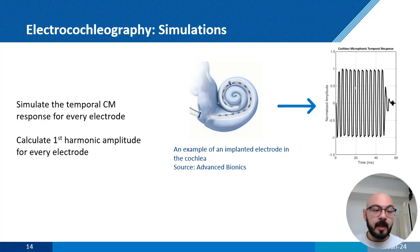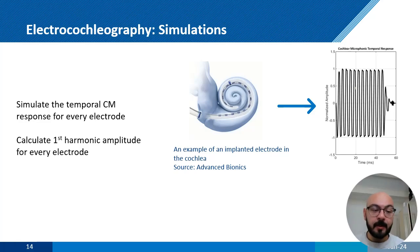Now let's talk about how we simulate ECoG in our model. First, we simulate the temporal cochlear microphonic response — that is, the response in time — for every single electrode. For example, in the cochlear implant shown in the figure, there are 16 electrodes, meaning we get 16 cochlear microphonic responses. We then calculate the first harmonic amplitude for every single response and combine them into the total response.